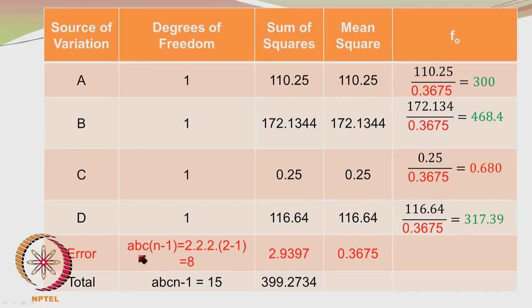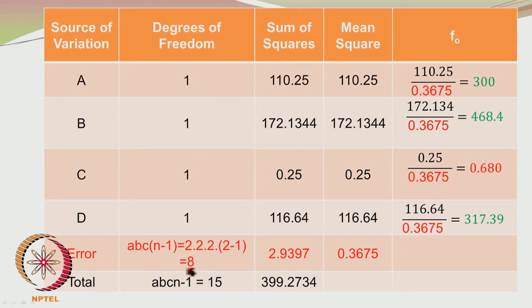The degrees of freedom for error would be A×B×C×(n-1), which is 8 for the present case as we have only 2 repeats per run. The sum of squares and the degrees of freedom are used to find the mean square. For each main effect or interaction you have only 1 degree of freedom. For error it is 8. Here you divide 110.25 by 1 to get 110.25, and then divide the sum of squares due to error, which is 2.9397, by 8 to get 0.3675.